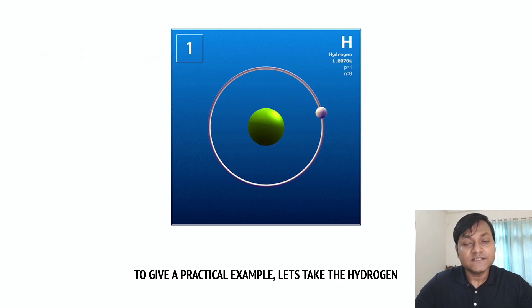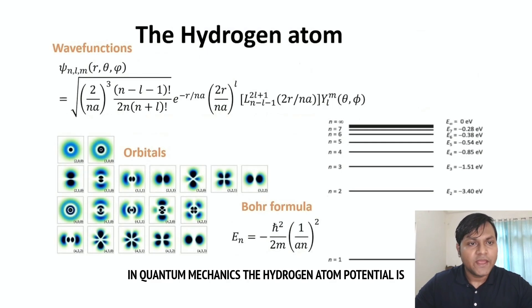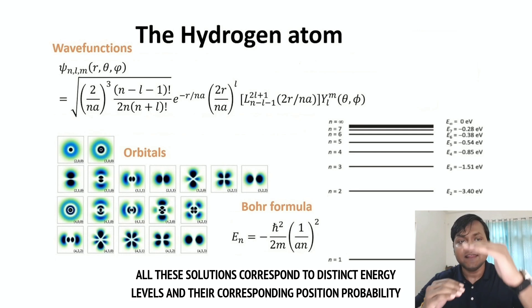To give a practical example, let's take the hydrogen atom, which classically we can think of as an electron going around a nucleus. However, in quantum mechanics, the hydrogen atom potential is associated with a large number of mathematical solutions. All these solutions correspond to distinct energy levels and their corresponding position probability densities.